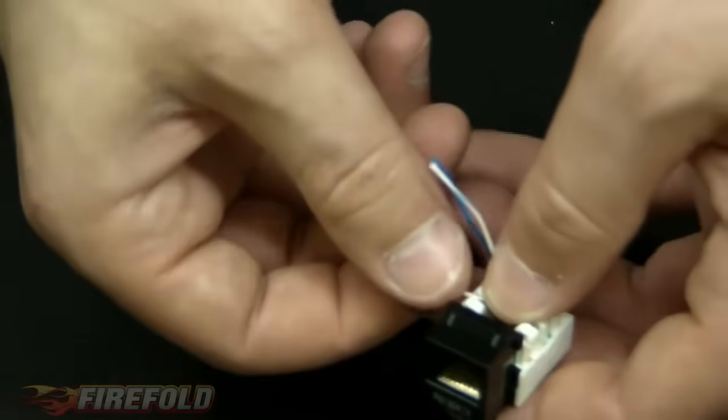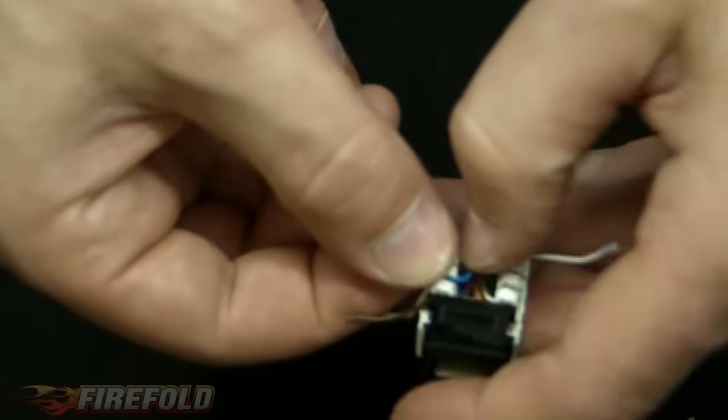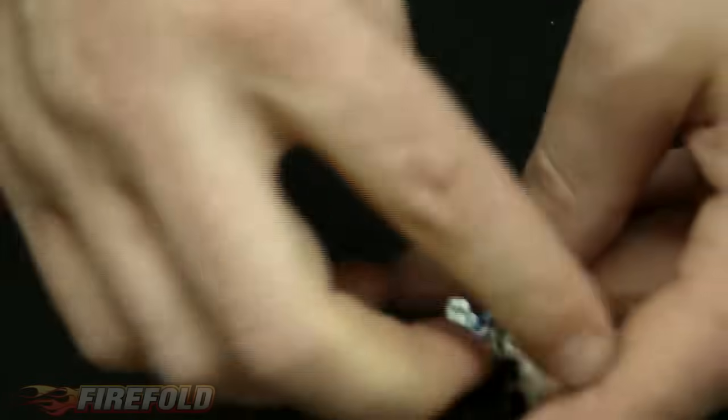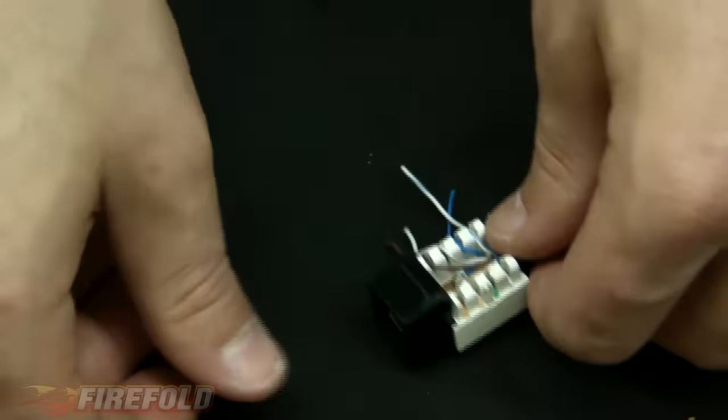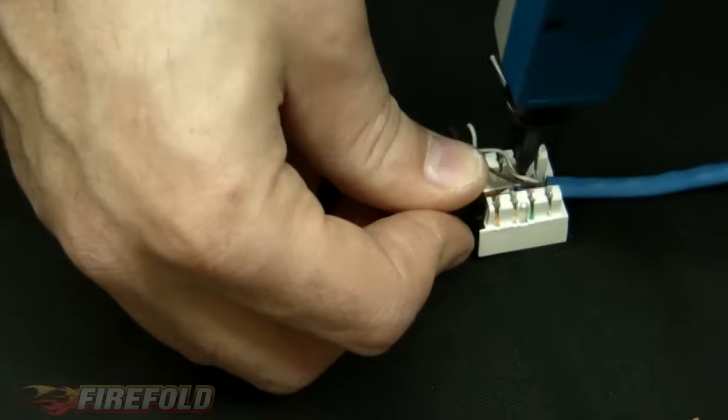We're going to put the solid brown on the top. Brown with white wire. And the solid blue. And then the blue with white wire. Now we're going to repeat the process on the other side.